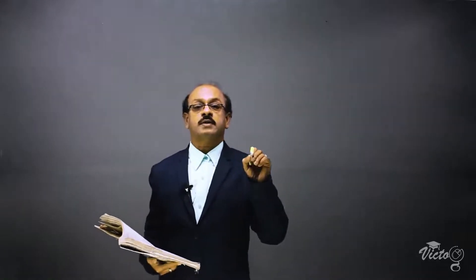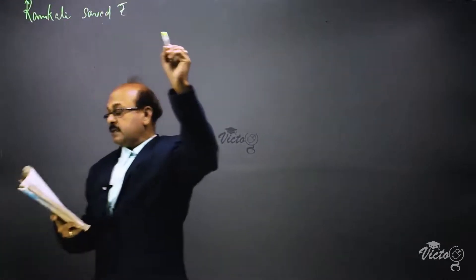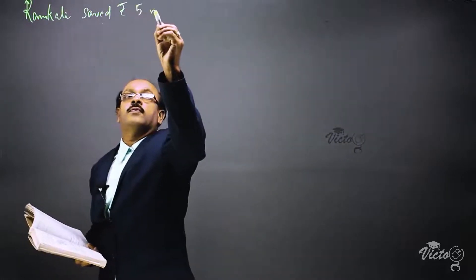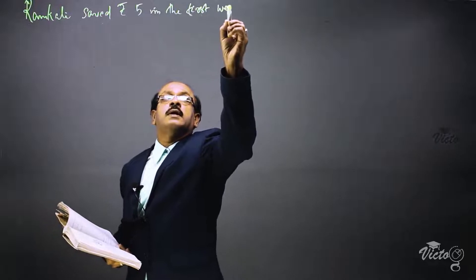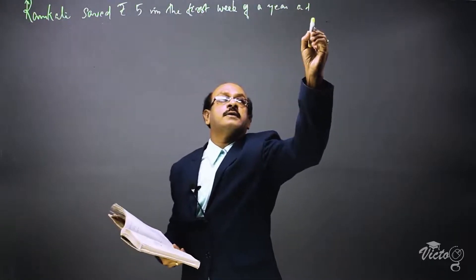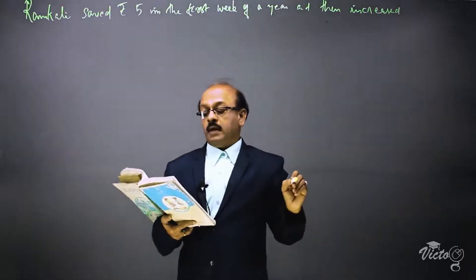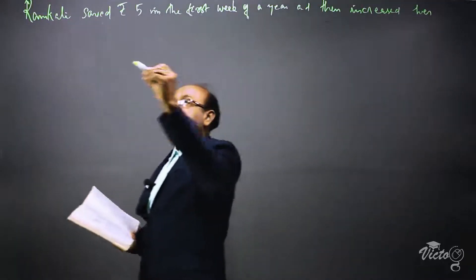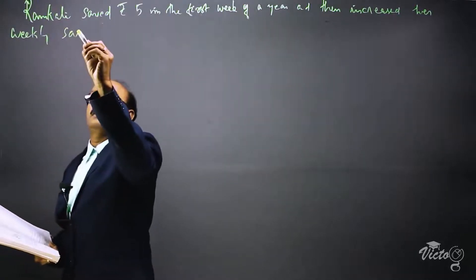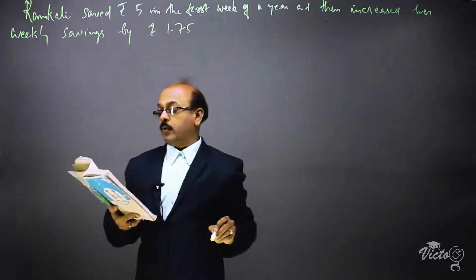Now we are going to do the last problem of exercise 5.2. The question is: Ramkhali saved rupees 5 in the first week of a year, and then increased her weekly savings by rupees 1.75.